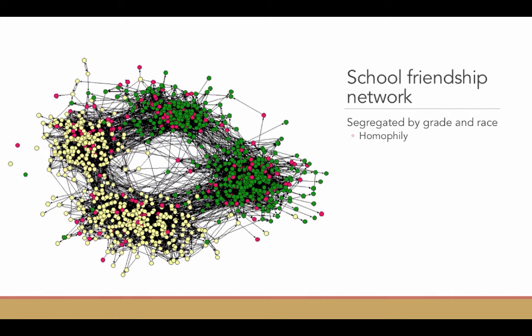This is another network. This is a school friendship network. What you can see here is that you've got four clusters of students. This is in a high school. Four clusters of students that the network as a whole indicate the network is segregated by both grade and by race.